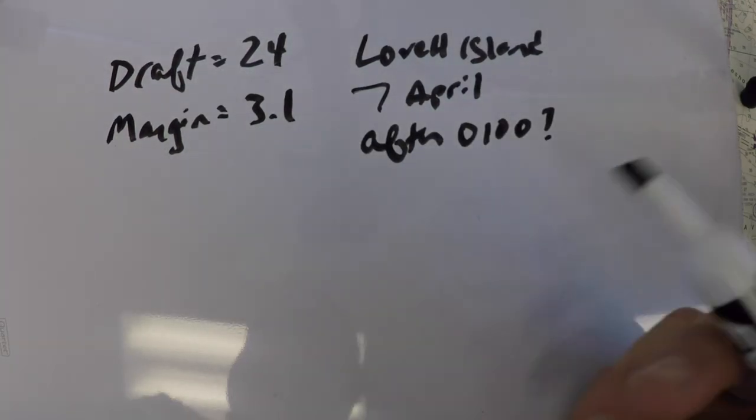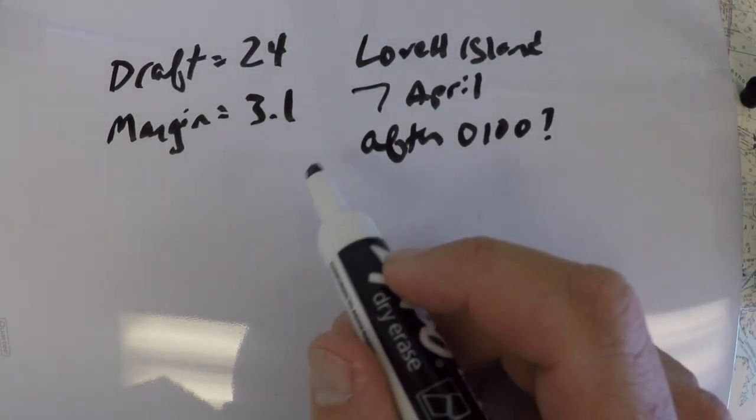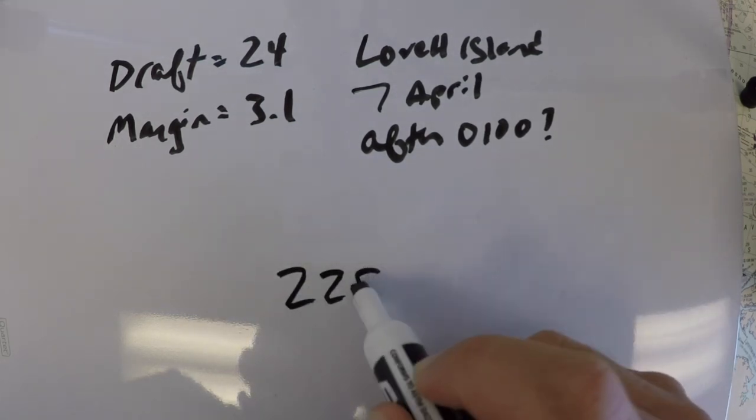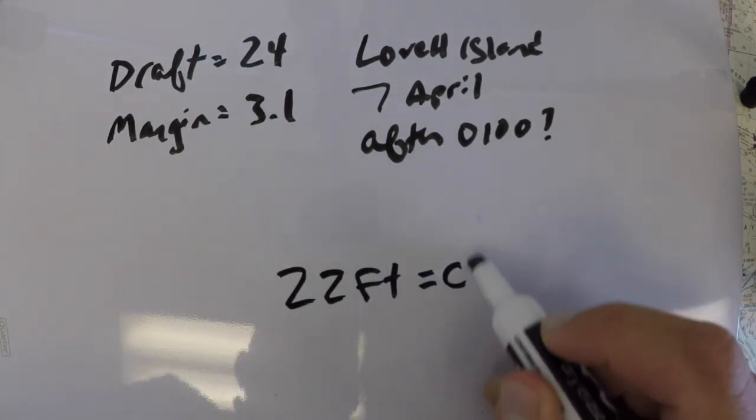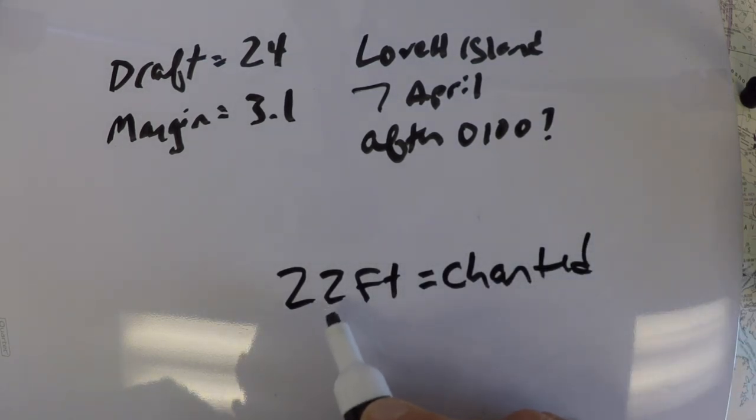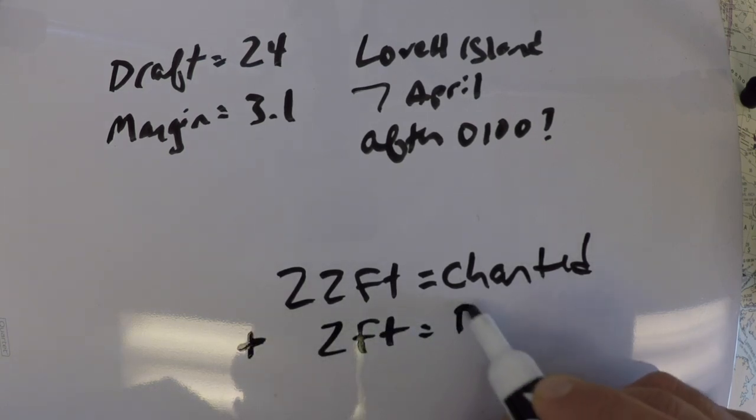So basically, we want to say, okay, the charted depth here is 22 feet charted. And our draft is 24. So we need at least plus two extra feet to deal with our draft.